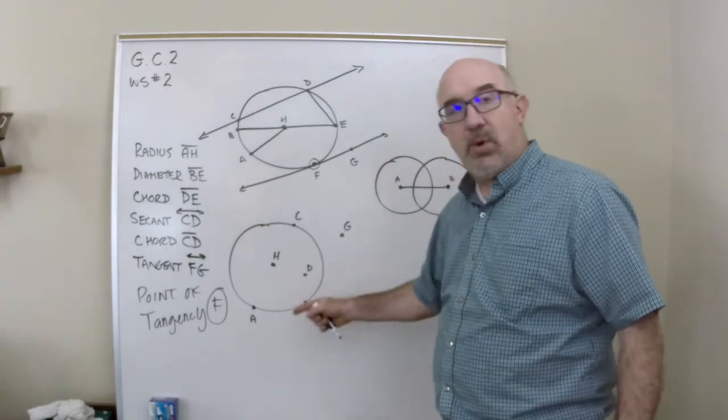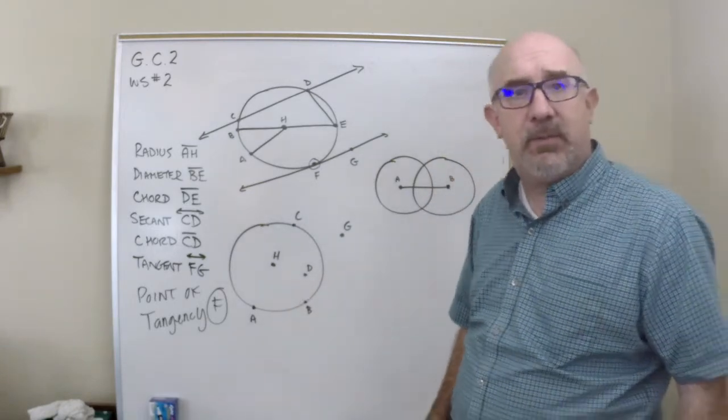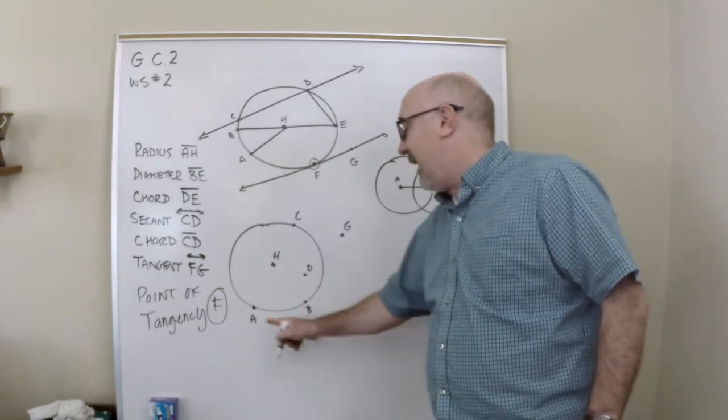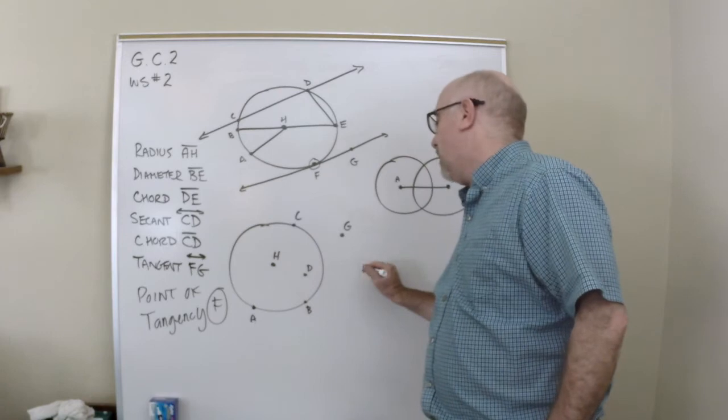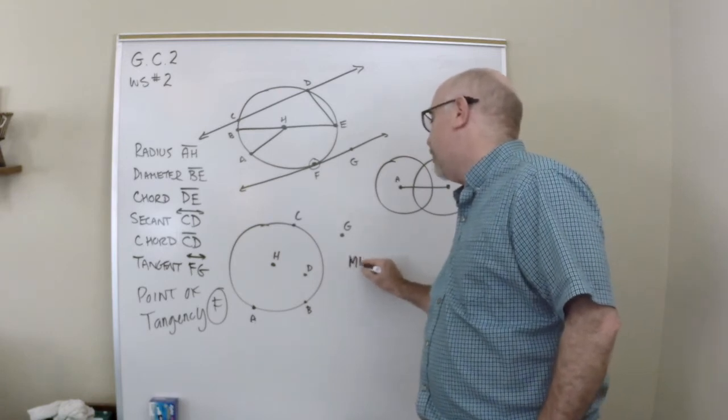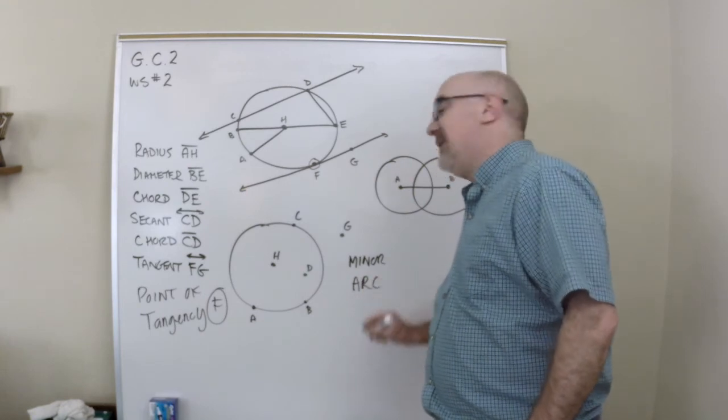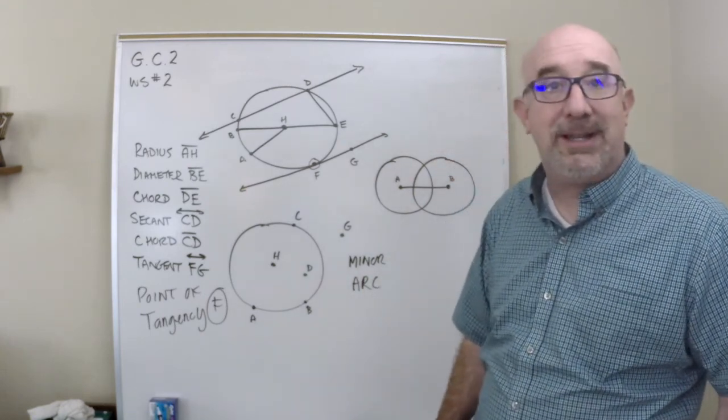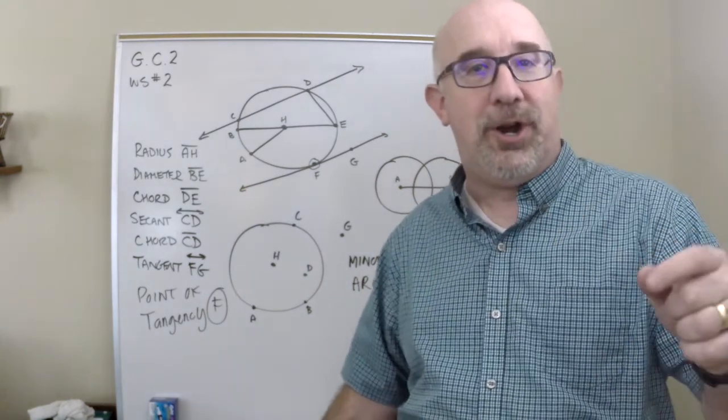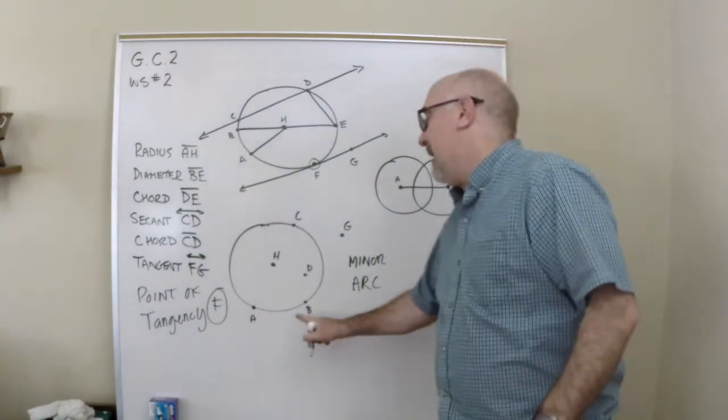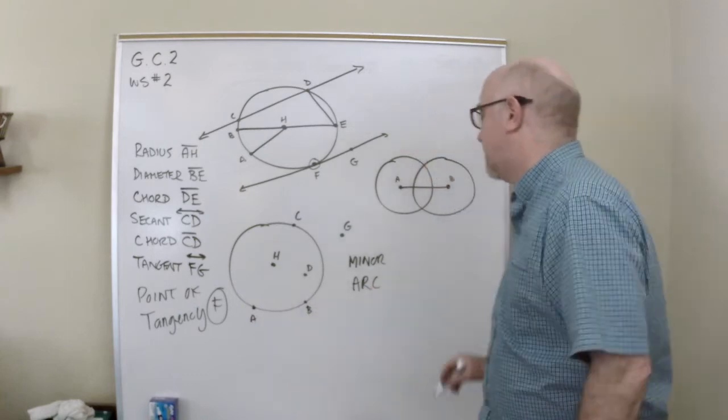Also, I want to just, this is more to the next experience, but we'll do it right now. We can talk about arcs. And AB is a, what they call a minor arc. Minor arc. And what it means to be minor is that you are less than a semicircle arc. In other words, you're less than 180 degrees. And so, this guy here is less than that.